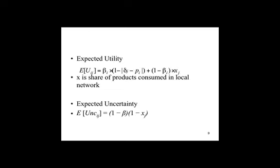So what makes an agent satisfied and uncertain? Satisfaction relates to the level of utility, which depends on two components: individual preferences and social influence. The closer the characteristics of the product delta and the preferences of the agent P, the higher the utility for the individual component. The agent also gets utility by consuming similar products as their neighbors. Not all agents will have the same weights between individual and social components — agents with a high beta value focus on their own preferences, while agents with a low beta value focus on the decisions of others.